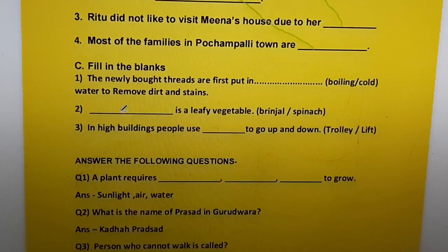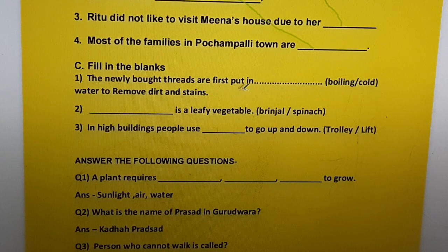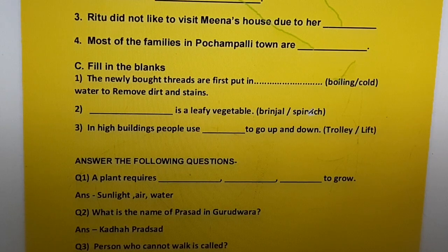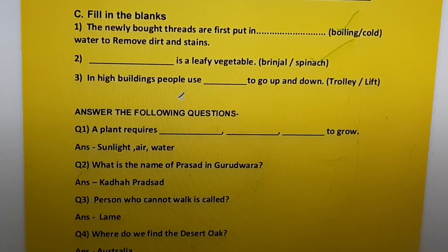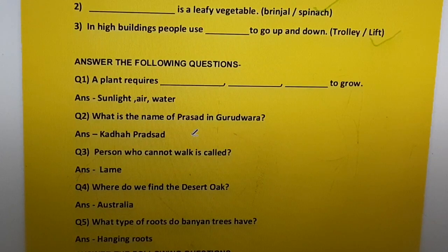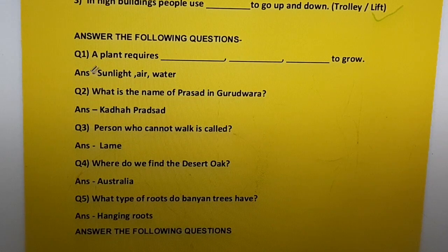Part C — Fill in the blanks again. 1) The newly bought threads are first put in boiling water to remove dirt and stains. 2) Spinach is a leafy vegetable. 3) In high buildings, people use a lift to go up and down.